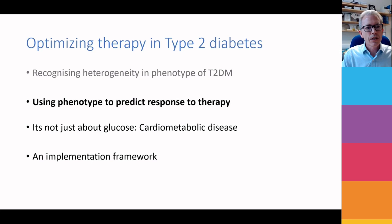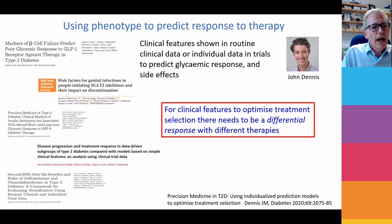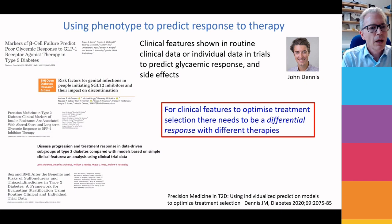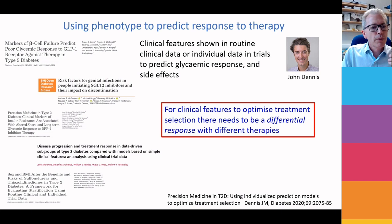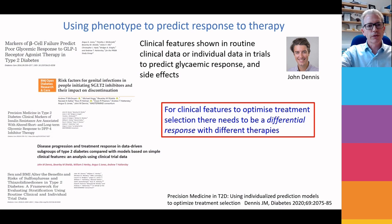So let's move on to think around: can we actually predict response to therapy? This is work that John Dennis from Exeter has really led on as part of a consortium called the Mastermind Consortium, which was an MRC-funded precision medicine consortium. Over the years, we have published a number of papers identifying clinical parameters that predict response or side effects to different drugs. The most important thing to recognize is that BMI being associated with response to a drug is only useful if BMI is associated with a good response to drug A and a poor response to drug B — we need to be looking for differential response.